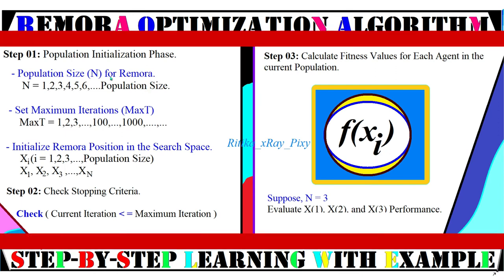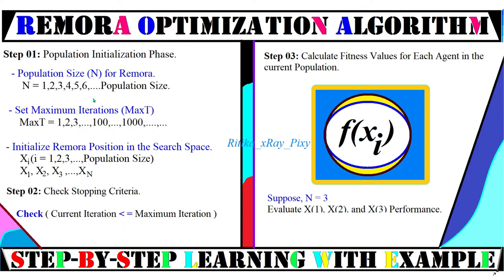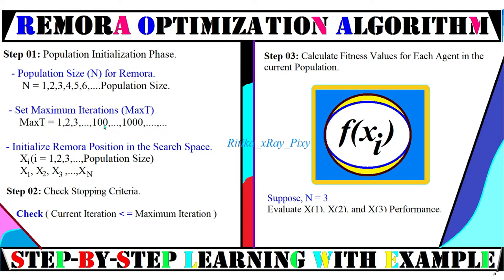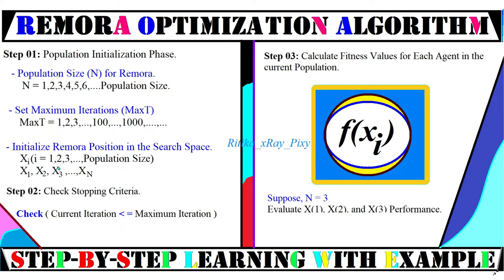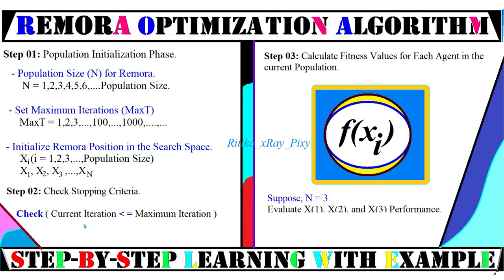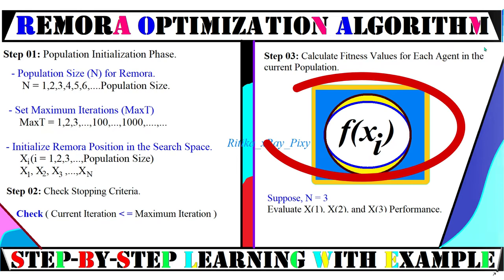Now we will understand how this algorithm works step by step with an example. First, in the initialization phase, we initialize the population N — the total number of remora in the population — along with the maximum number of iterations. Then we initialize the position for each candidate in the search space. For example, with three remora, the positions are x1, x2, x3, and so on. After that we check the stopping criteria: whether the current iteration is less than or equal to the maximum number of iterations.